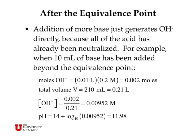After the equivalence point, addition of more base simply generates hydroxide ion directly because all the acid has already been neutralized. For example, adding 10 additional milliliters of base beyond the equivalence point gives 0.01 liters times 0.2 moles per liter, or 0.002 moles of hydroxide. The total solution volume is 210 milliliters (0.21 liters), so the hydroxide concentration is 0.002 divided by 0.21, or 0.00954 moles per liter, giving a pH of 11.98.